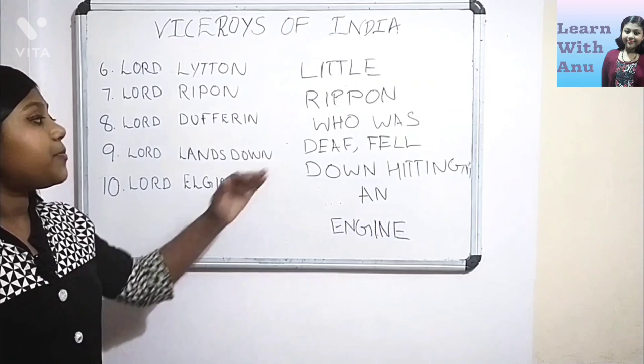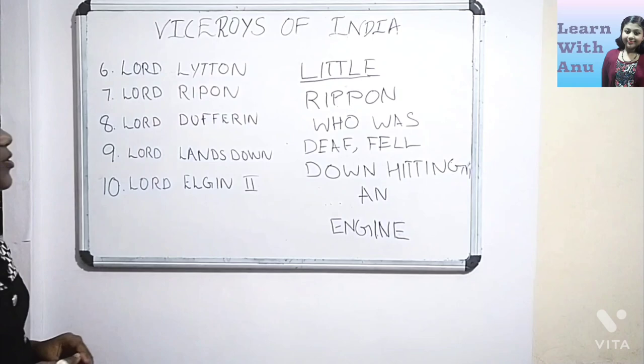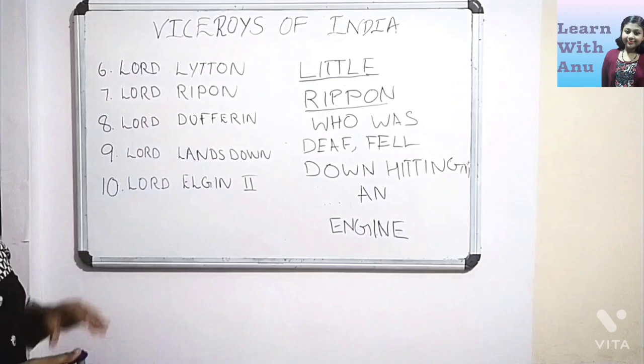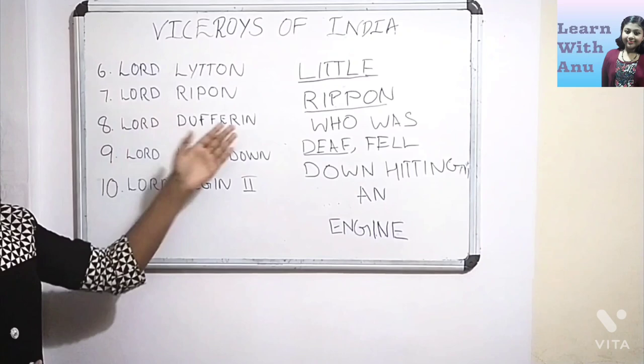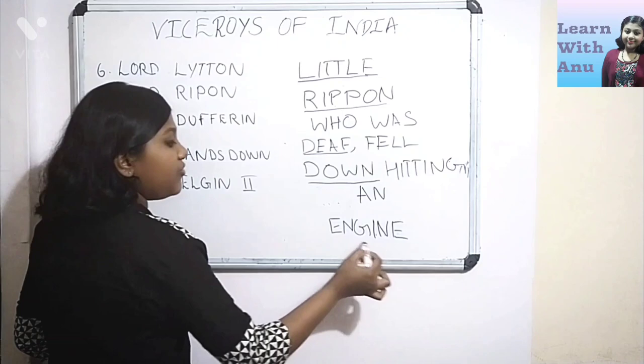Here: 'Little Rippon, who was deaf, fell down here, hitting an engine.' This 'little' represents Lord Lytton. 'Rippon' completely represents Lord Rippon. The word 'deaf' represents 'Duff' in Lord Dufferin. And 'down' represents Lord Lansdowne. At last, 'engine' represents the word Elgin.